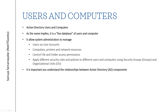Active Directory allows system administrators to manage users via user accounts, computers, printers, and network resources. It allows you to control file and folder access permissions — for example, specifying that a user can only print to a particular network printer. You can also apply different security rules and policies to different users and computers using security groups and organizational units, which I will go over in the next few slides.